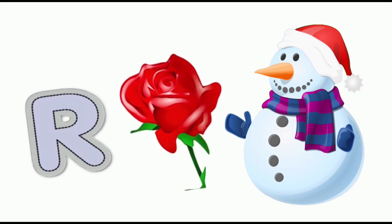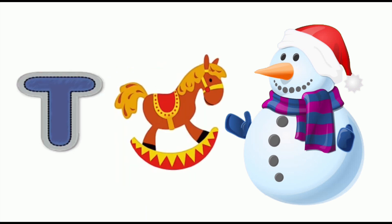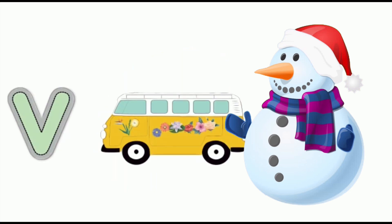R for rose. S for shirt. T for toy. U for umbrella.